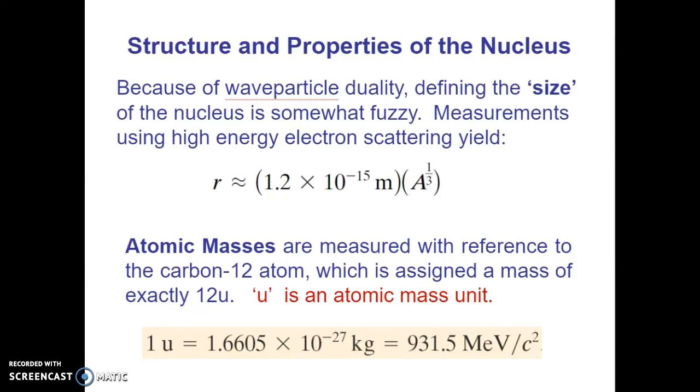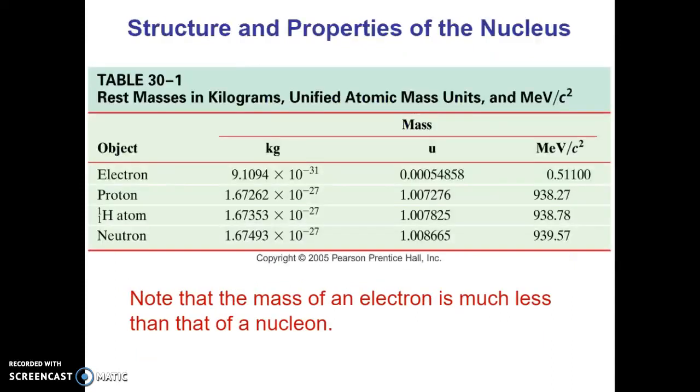Here's a table of useful values for an electron, proton, hydrogen atom, and neutron. The hydrogen atom includes the electron. You have the mass in kilograms, atomic mass units, and mega electron volts over c squared. You see here the electron is much less massive than any of the other nucleons, and the other nucleons are relatively similar.